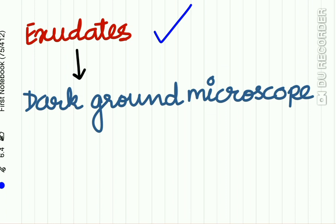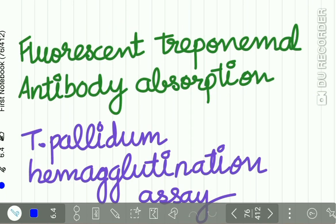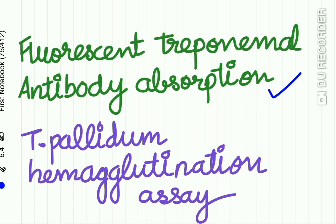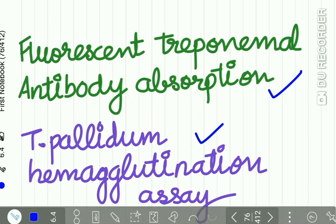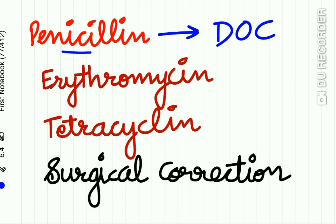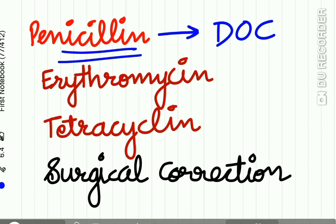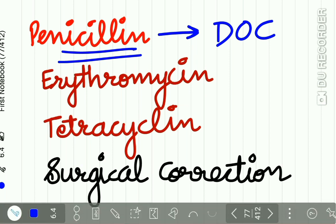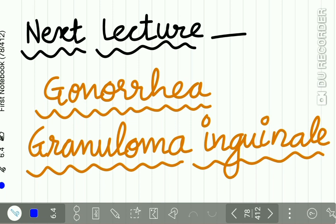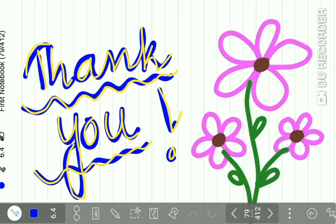Exudates from lesions can be examined under dark ground microscopy. Fluorescent treponemal antibody absorption test and Treponema pallidum hemagglutination assay are serological tests used. The drug of choice is penicillin; erythromycin and tetracycline can also be used, and surgical correction is also a method of treatment. With this we complete the lecture on syphilis — the next lecture will be on gonorrhea and granuloma inguinale.